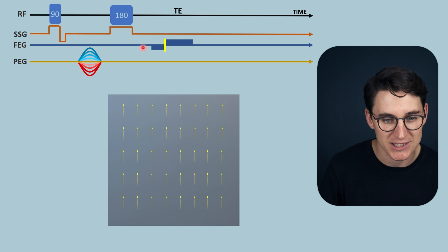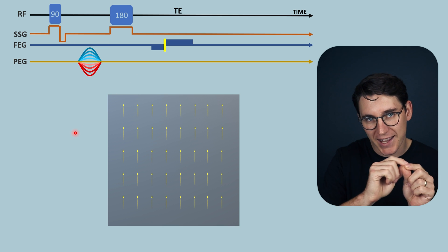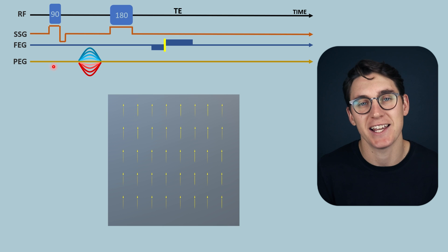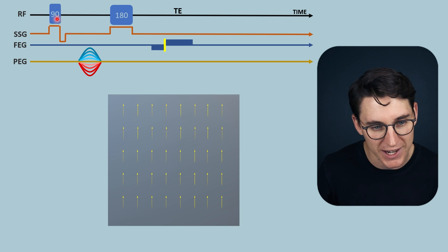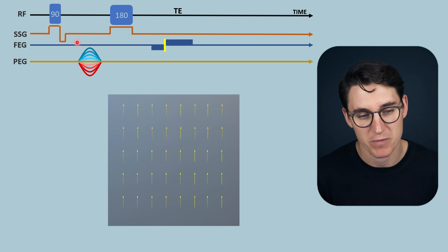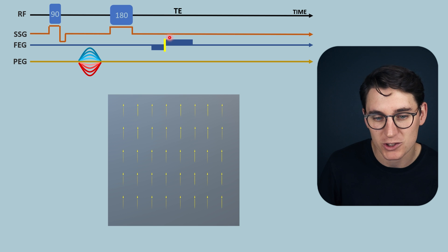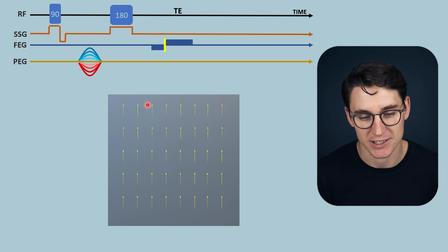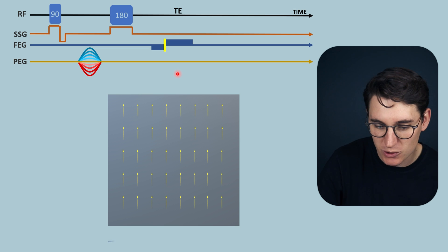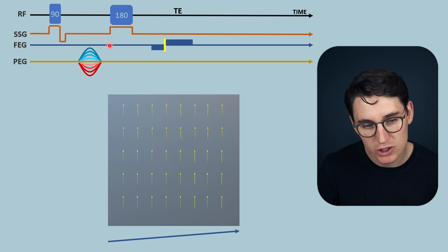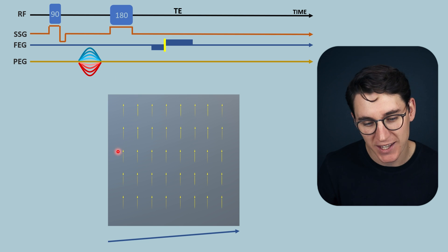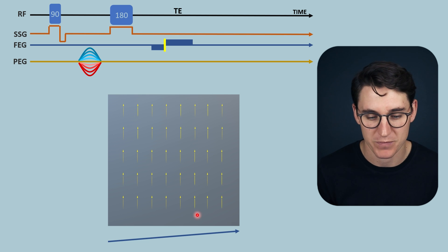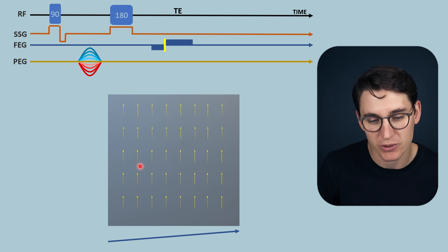When we have a pulse sequence, there are many times when we apply a magnetic gradient across one dimension of our slice. We apply a slice selection gradient along the longitudinal axis to match a radio frequency pulse and select a specific slice, a frequency encoding gradient whilst acquiring signal, and a phase encoding gradient to generate phase differences along the y-axis. Applying any of these gradients creates a processional frequency difference across the direction of that gradient, based on location.